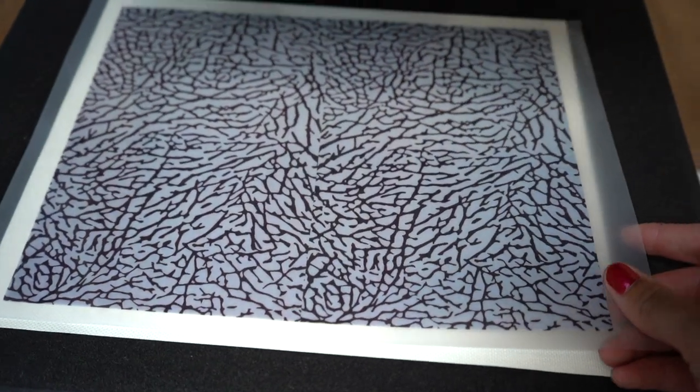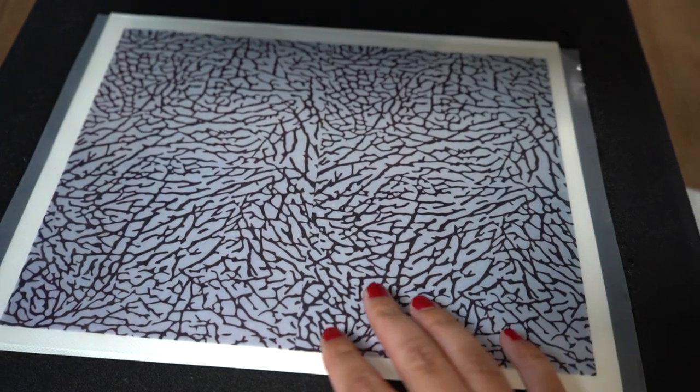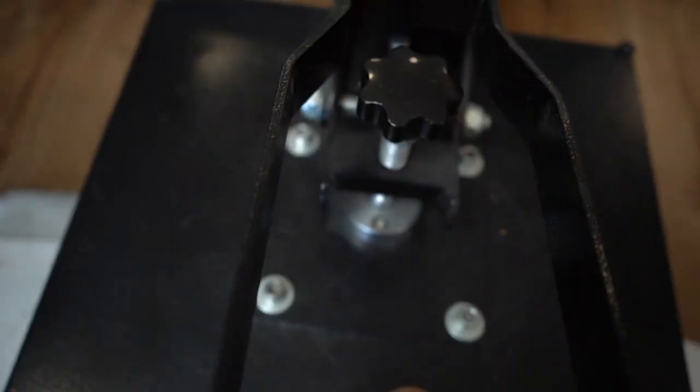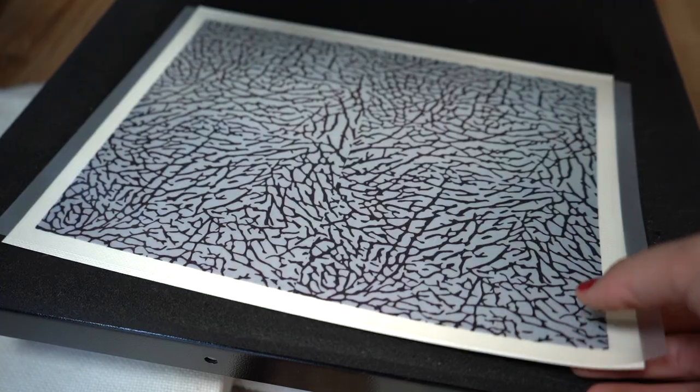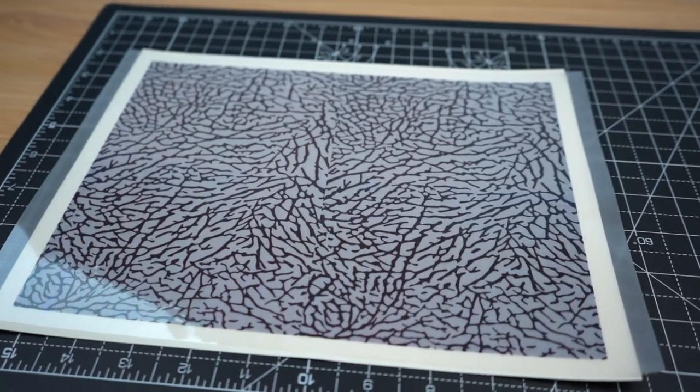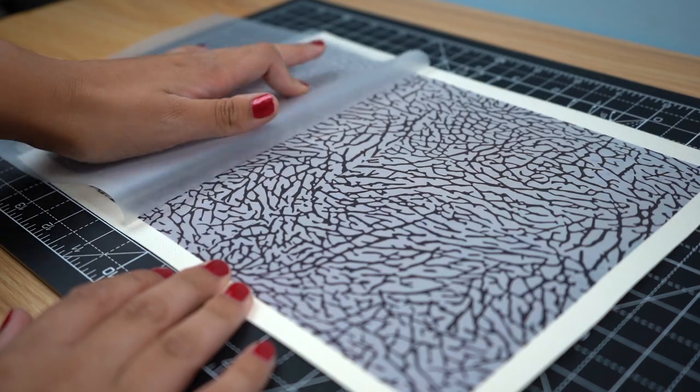To do this I'm just going to place both in a heat press that's heated to 310 degrees, cover them with parchment paper and then press for 30 seconds. Once pressed I'm going to take it out to cool for about two minutes and then I'm just going to bend and peel the film away.